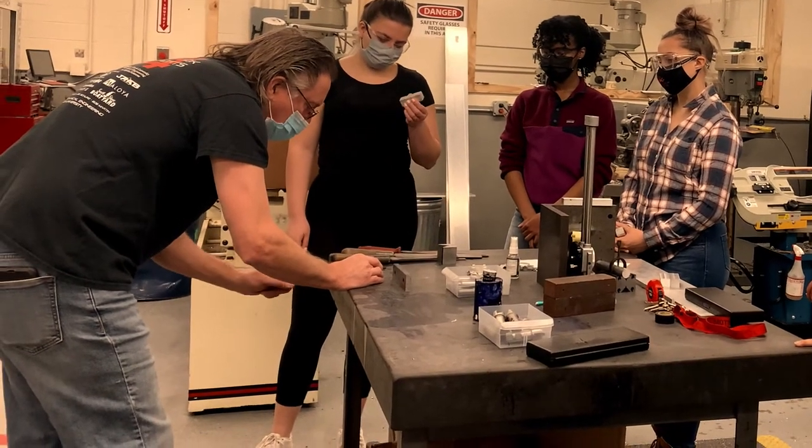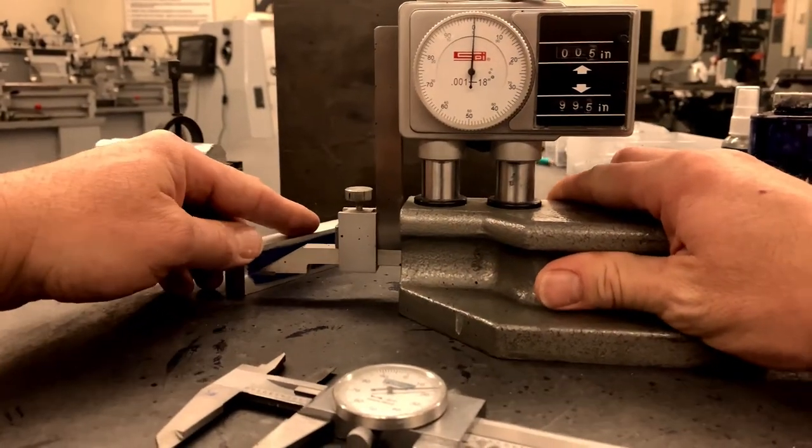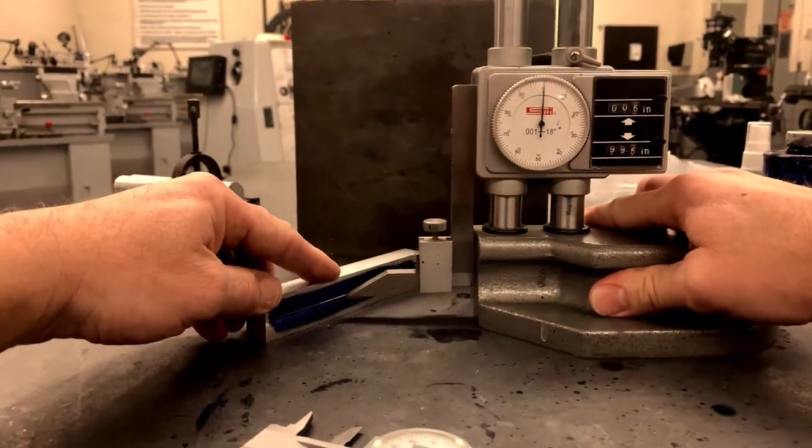Students will begin by learning how to interpret their drawing and lay out the dimensions on their raw materials using a height gauge, scribe, and surface plate.